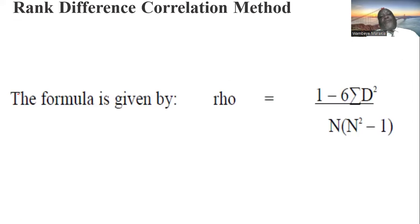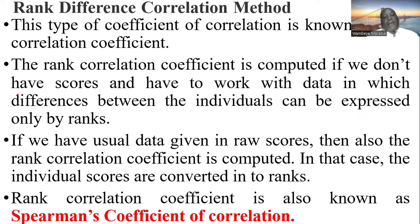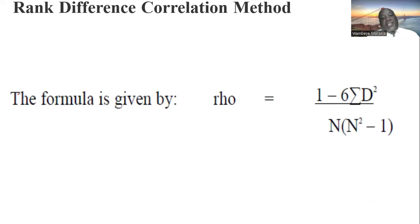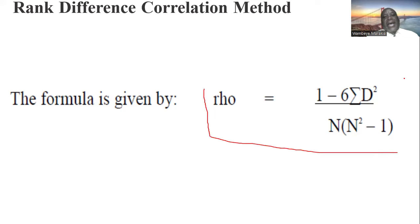The formula for the Spearman coefficient of correlation is: Rho equals 1 minus 6 times the summation of d squared, all over N times the quantity (N squared minus 1). This is the formula displayed on screen. Let me now show you how we use this formula in calculating the rank difference correlation coefficient.